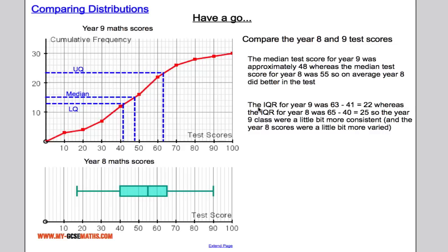However, the interquartile range for year 9 was 22. For year 8 was 25. Year 9 class was a little bit more consistent and the year 8 class was a little bit more varied. Not a huge difference, but no problem to mention that there.